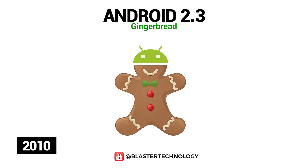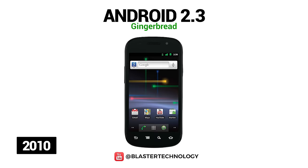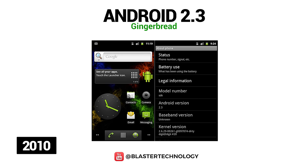Android 2.3 Gingerbread was launched in 2010, and the first phone with this version was the Nexus S, co-developed by Google and Samsung. The new version of Android had an updated UI design, support for extra-large screen sizes and resolutions, support for NFC, an improved keyboard, support for multi-touch, and support for the front camera.